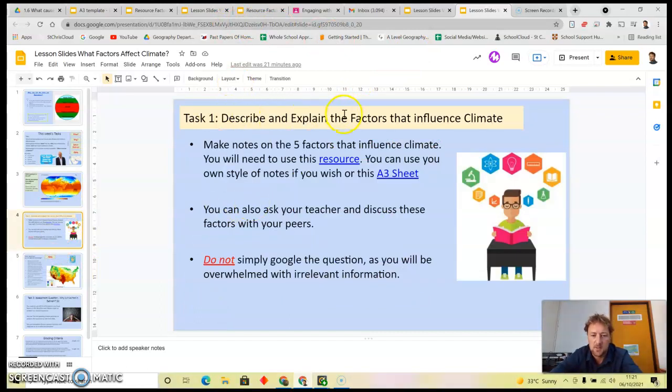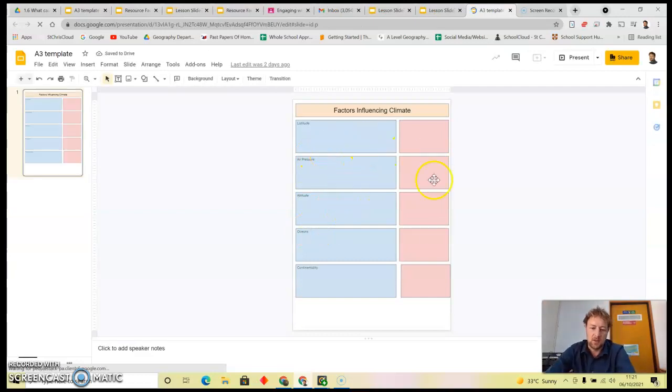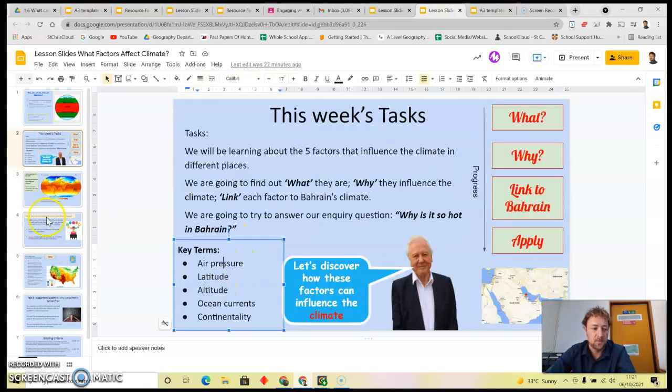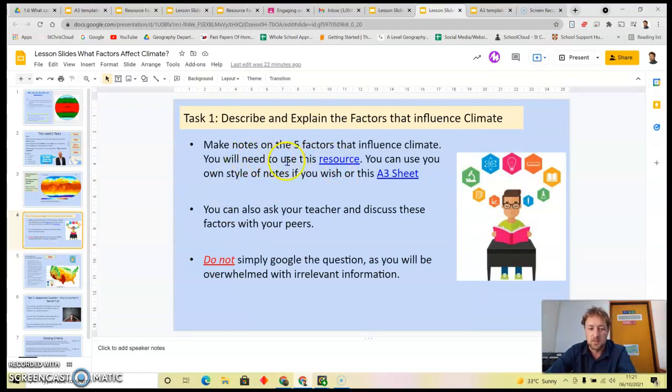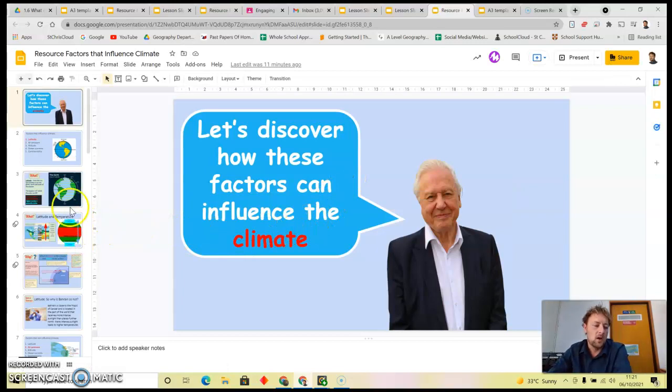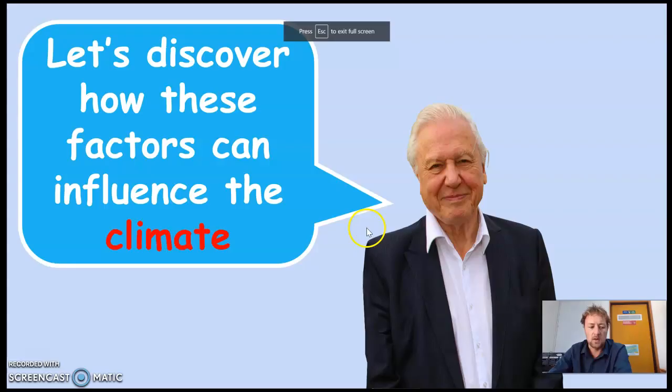So this is your main task here. Task one, describe and explain the factors that influence climate. You can set this up as you like, but I have also included this A3 template for each factor with a picture. So you can use the A3 template if you want to. You can do it in a note on paper, or you can do it in your own Google Doc or Google Slides. But if you don't know what to do, use this template. You need to make notes on the five factors. The five factors are the same as those key terms there. So you click on this resource, because you'll need to use this resource. So click on that, go to this slideshow, and discover how these factors influence climate. So I'm going to go through these very quickly.